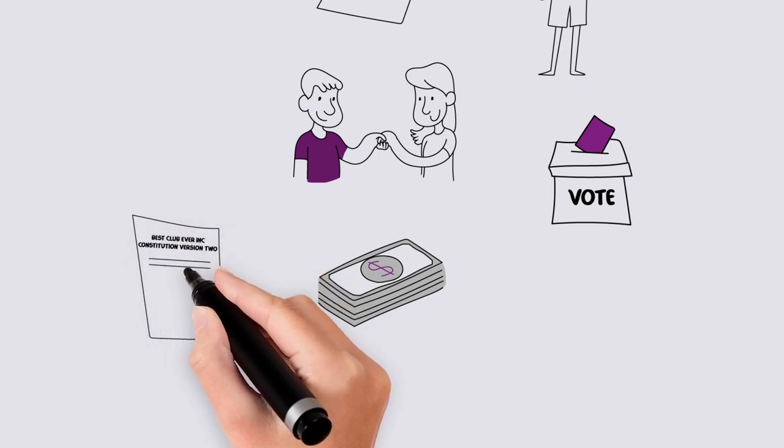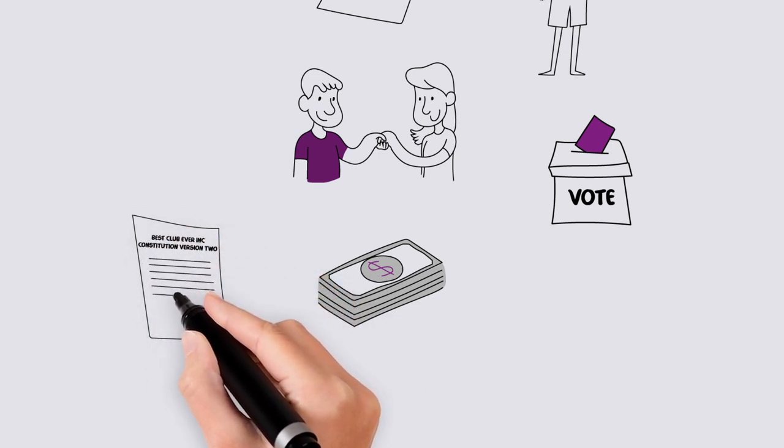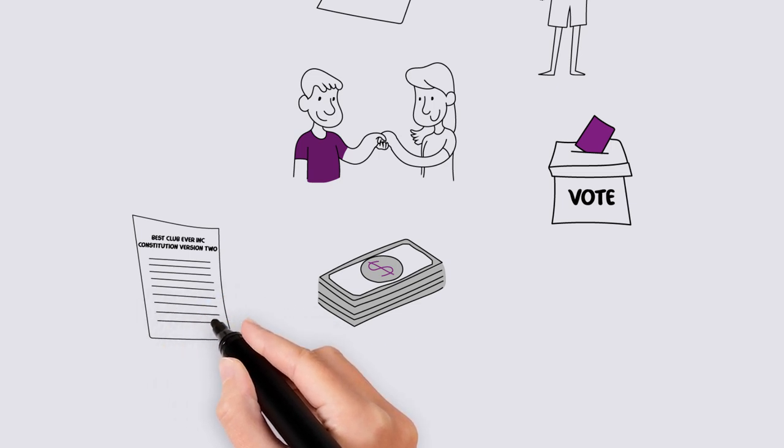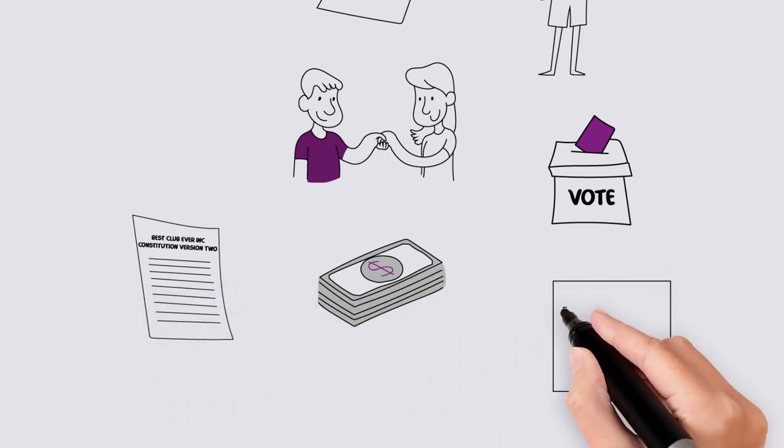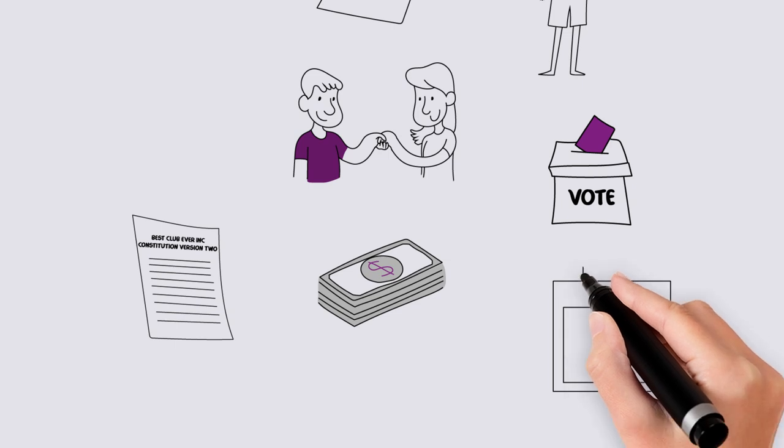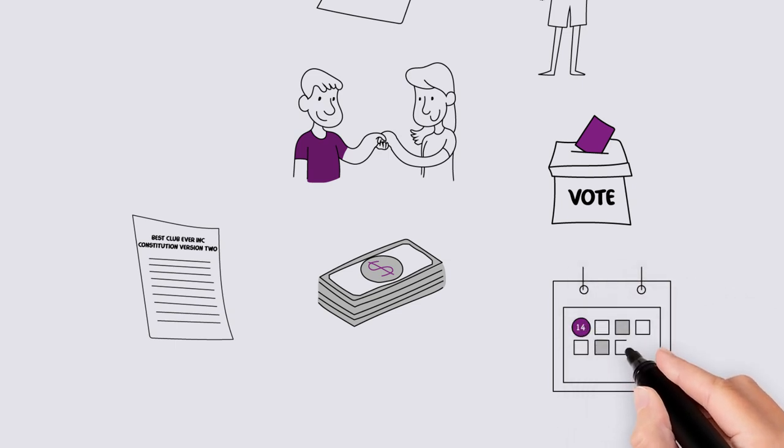The legal name of the association must include the word incorporated. The minimum notice to your members for your annual general meeting must be at least 14 days. The amount of notice for a special resolution is at least 21 days.